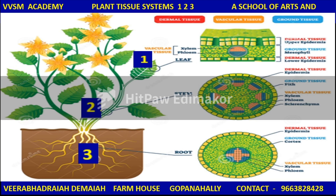The main parts of the plant are the leaf, stem, and root system. The shoot system consists of the leaf and stem, while the root system consists of roots.